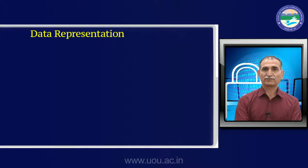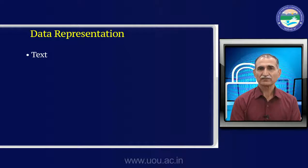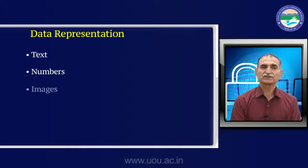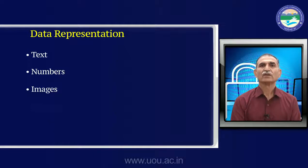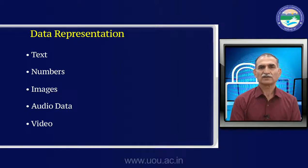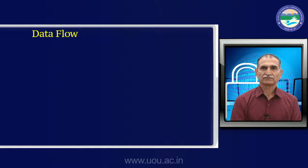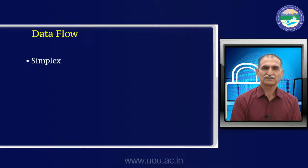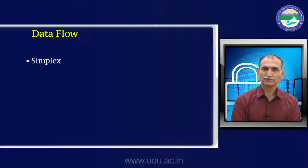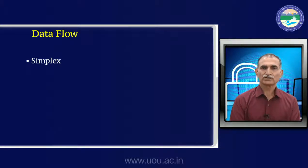How data is represented: it could be text in the form of ABCD, it could be numbers, images — most people use Facebook and share camera images over the network. There are audio messages, and video — all TV broadcasts and cricket matches today come in the form of data. How does this data flow on the network? There are three methods. Simplex means either receive or send — a computer monitor only receives data, while the CPU only sends/computes and sends data.